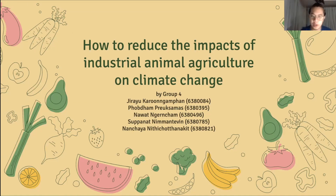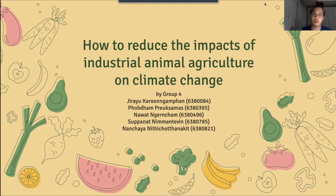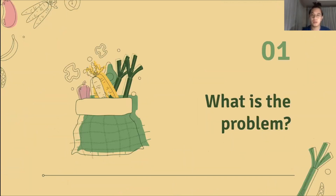Hello, Professor Ramesh and my friends. Today I will introduce you to how to reduce the impacts of industrial animal agriculture on climate change. Our group is group number four. Here is our name list. So to begin, I will explain to you what the problem is and what we need to fix.